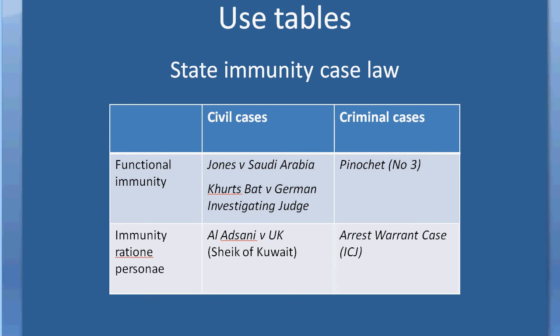For instance, if I want to explain why the reasoning in Pinochet No. 3 might be different from the reasoning in Al-Adsani v UK — where Mr. Al-Adsani attempted to sue the government and Sheikh of Kuwait in a civil claim for torture — one of the distinctions might be that one's a civil case and the other's a criminal case, and it's also relevant that the cases were dealing with different types of immunity. That's an example of trying to simplify complex legal concepts by reducing them to a table, and the same technique can be used in other areas.